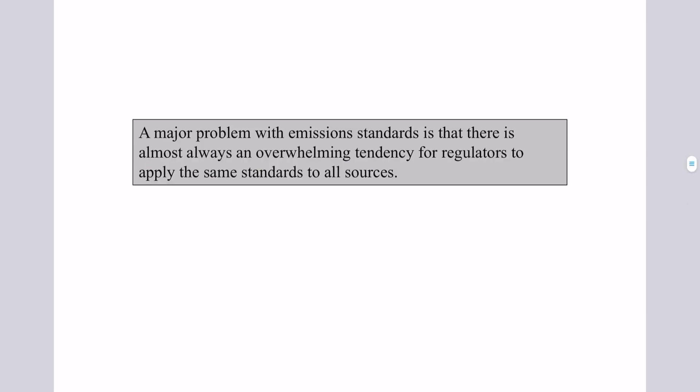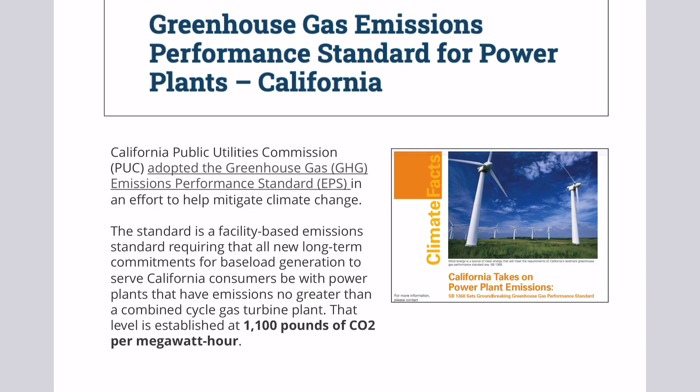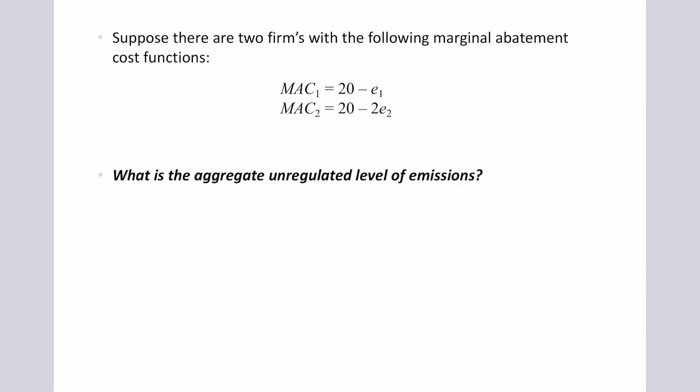A major problem with emission standards or command and control regulation more generally is that there is almost always an overwhelming tendency for regulators to apply the same standards to all sources. Here's an example from California on power plant emissions: the standard level is established at 1,100 pounds of CO₂ equivalent per megawatt hour, and that's the same standard for all firms in California. So what I want to do now is use a simple example of two firms, looking at a uniform emission standard to reach an environmental target and the cost associated with getting there.